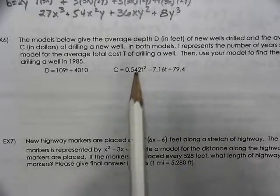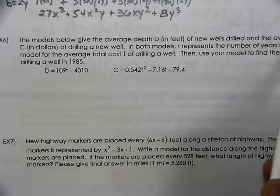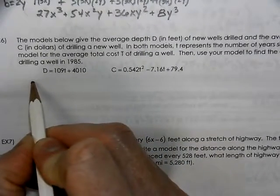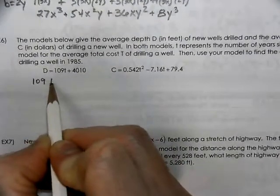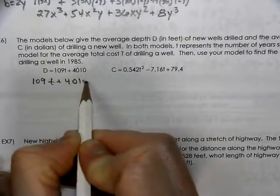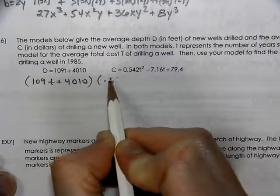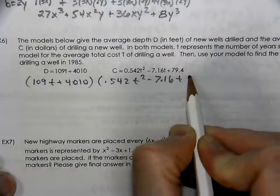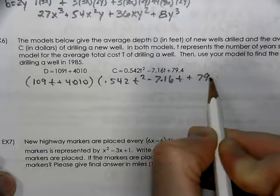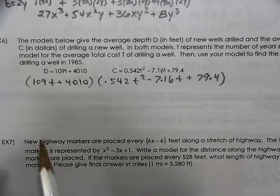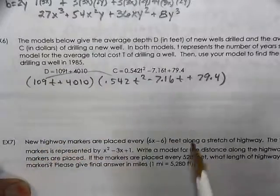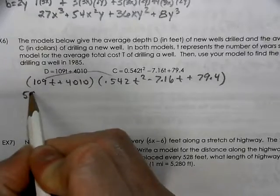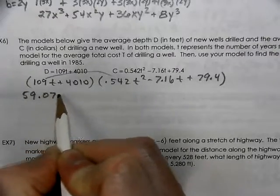Well, the total cost is going to be the depth times the cost per foot. So we're going to take the depth and we're going to multiply that by the cost. We're going to multiply this out. So we're going to get some huge crazy numbers. So we're going to multiply the first two and we get 59.078.